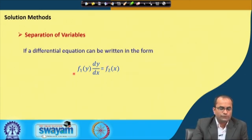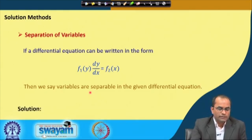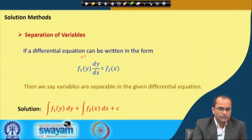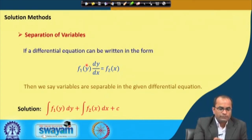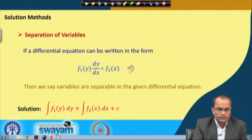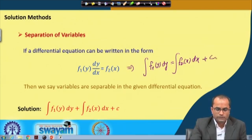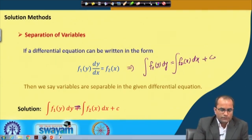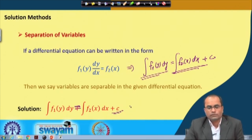If we can put the equation in such a form, then we can easily integrate. We say that the variables are separable in the given differential equation. Once we separate the variables, we write f₁(y)dy = f₂(x)dx and then simply integrate both sides with a constant of integration: ∫f₁(y)dy = ∫f₂(x)dx + c.